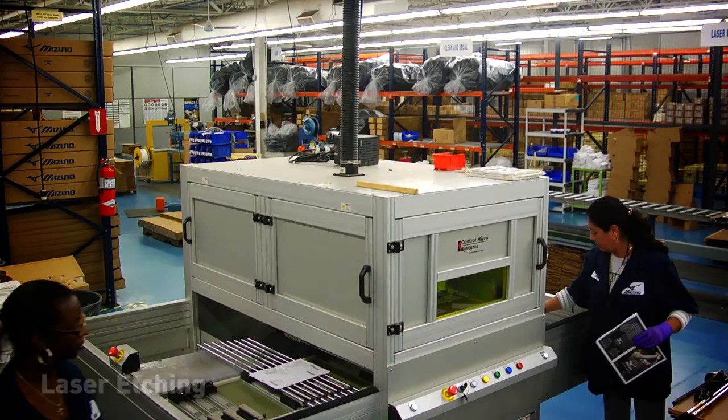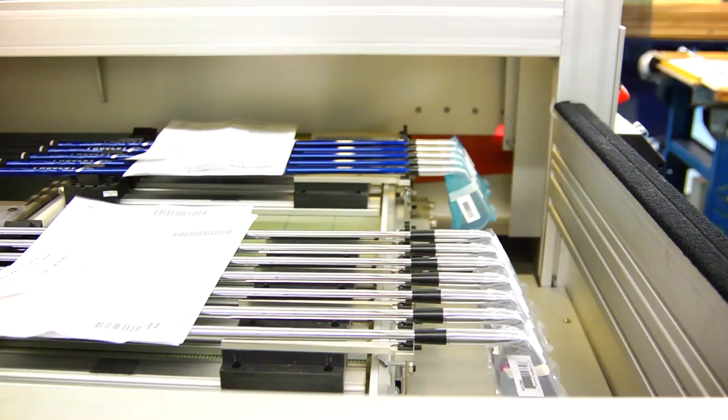The order then moves along to the laser etching machine, which applies your specific order number to the back of the hosel of every golf club in the set. The serial number is warehoused at Mizuno USA to keep a record of your individual club specifications for any necessary future reference or if a club is lost or needs repair.